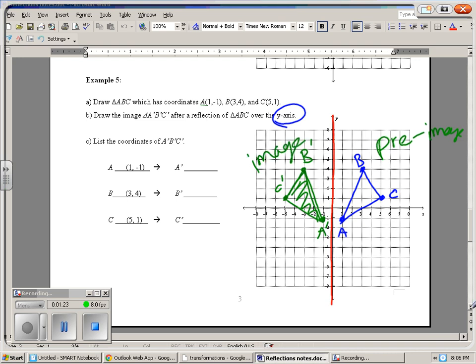And then we'll write our values. So A was (-1, -1), A prime. B prime is (-3, 4). And C prime is (-5, 1). And when you flip it over the y-axis, the y values stay the same, but the x values are the opposite of what they were originally.